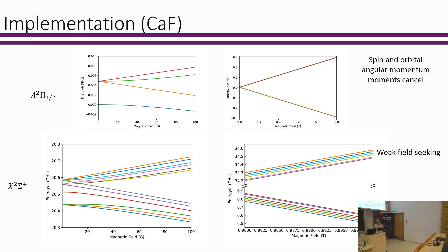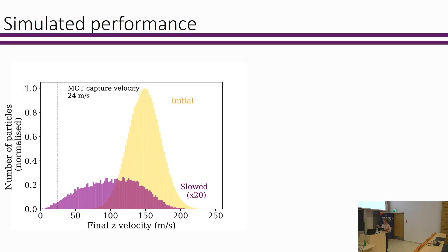We've been working on some simulations of how this decelerator could work with calcium fluoride as the test molecule. By doing quantum Monte Carlo, we can essentially take our initial buffer gas beam, decelerate it through or propagate it through the decelerator, and we get a broad pulse moving through the decelerator. At the end, we do have some molecules down below this 24 meters per second capture velocity for a calcium fluoride MOT.